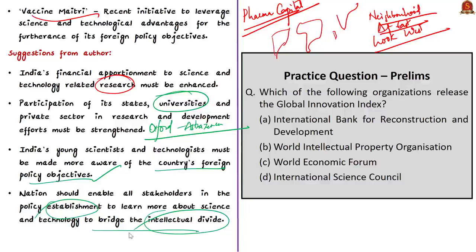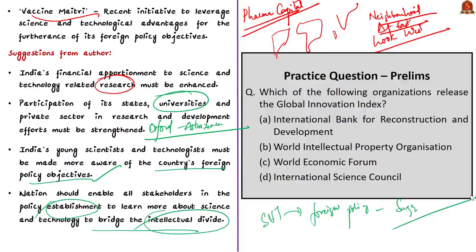These are the solutions given by the author to develop India into a world leader in technology. We had a brief discussion on how science and technology evolved in India, how India is leveraging its S&T prowess to match its foreign policy objectives, and what solutions the author proposes.